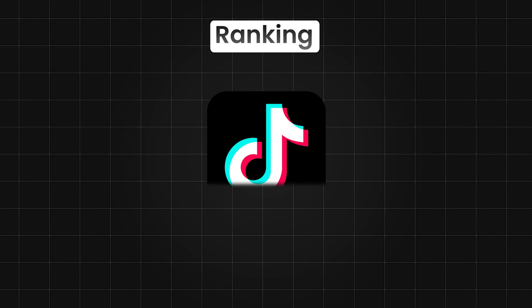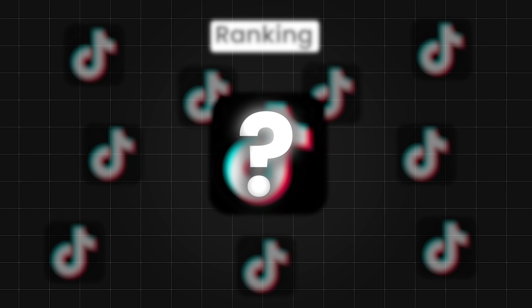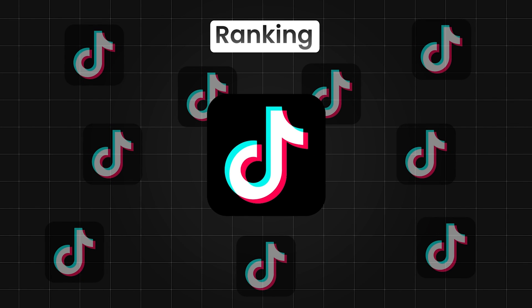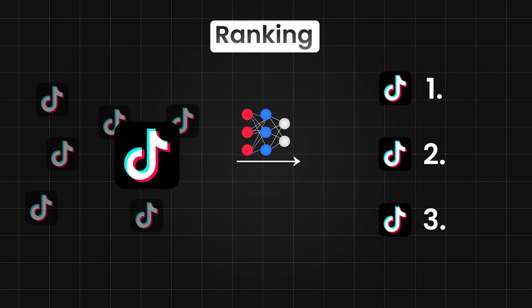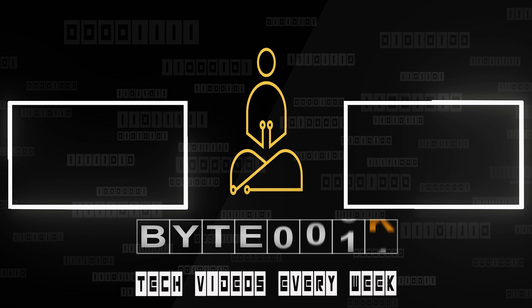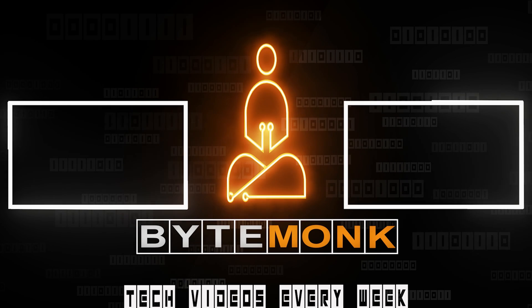This leads into our final topic of ranking. Let's say you want to open the TikTok app — there are literally millions, if not billions, of TikToks out there. How does TikTok know which TikTok to put in your feed when you open the app? First, they narrow down to, say, a few hundred, and then they use a ranking model to select the first, second, and third TikTok you will view as you scroll through your feed. The goal is to keep you scrolling for as long as possible. So those are the topics we'll be covering in our Machine Learning Crash Course — we'll see you next time.